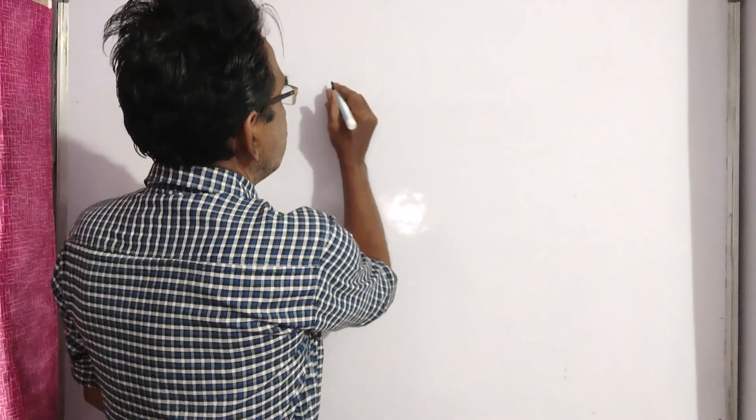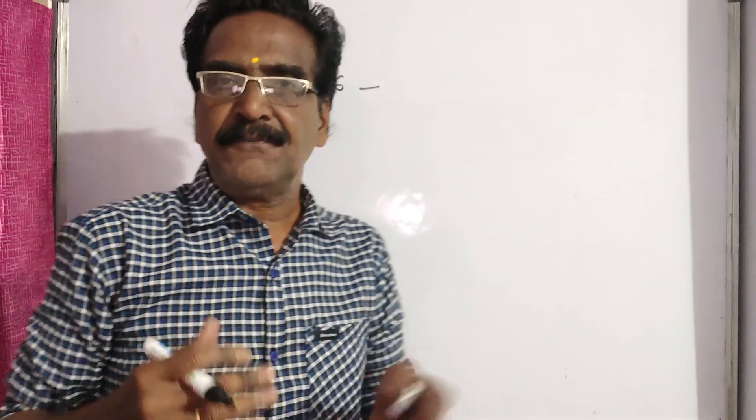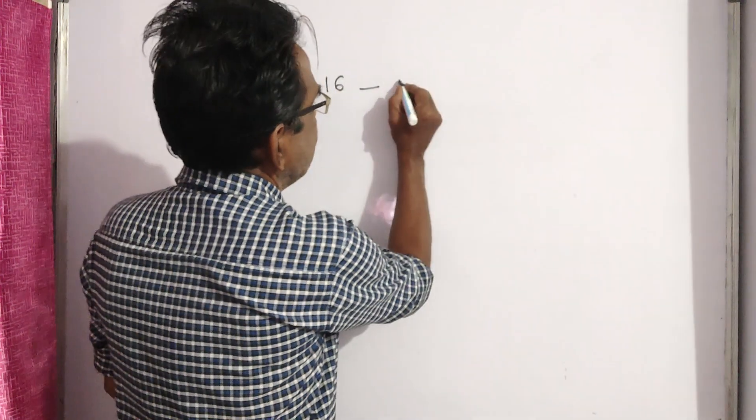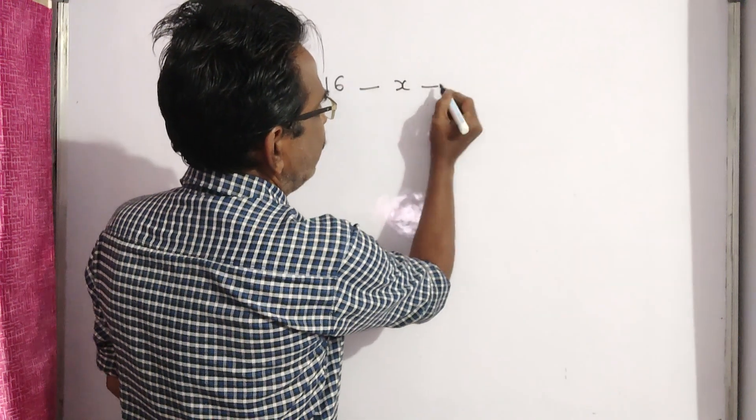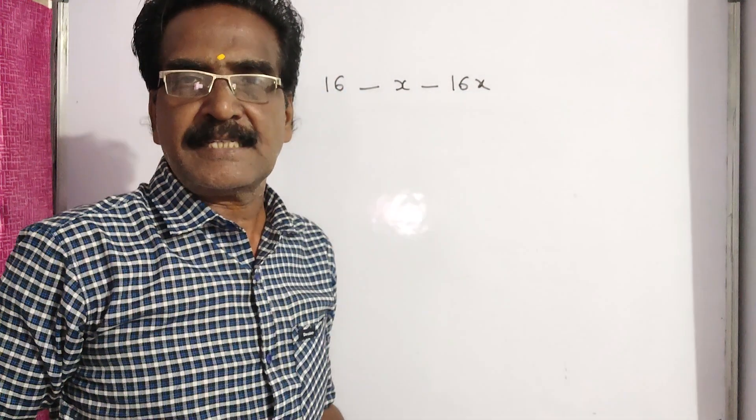Up to 16 matches, that is before playing the 17th match, let us say his average is X. Then the total runs up to 16 matches is 16X.